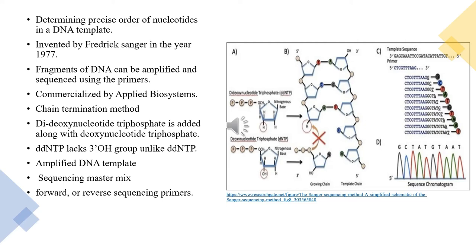In the chain termination sequencing method, dideoxynucleotide triphosphates (ddNTPs) are added along with deoxynucleotide triphosphates (dNTPs). Dideoxynucleotide triphosphates lack a 3'-hydroxyl group in the sugar molecule, whereas deoxynucleotides have a 3'-OH group, which aids in the formation of a phosphodiester bond between two nucleotides. Since ddNTPs lack the 3'-OH group, they cause chain termination without forming a phosphodiester bond between nucleotides.